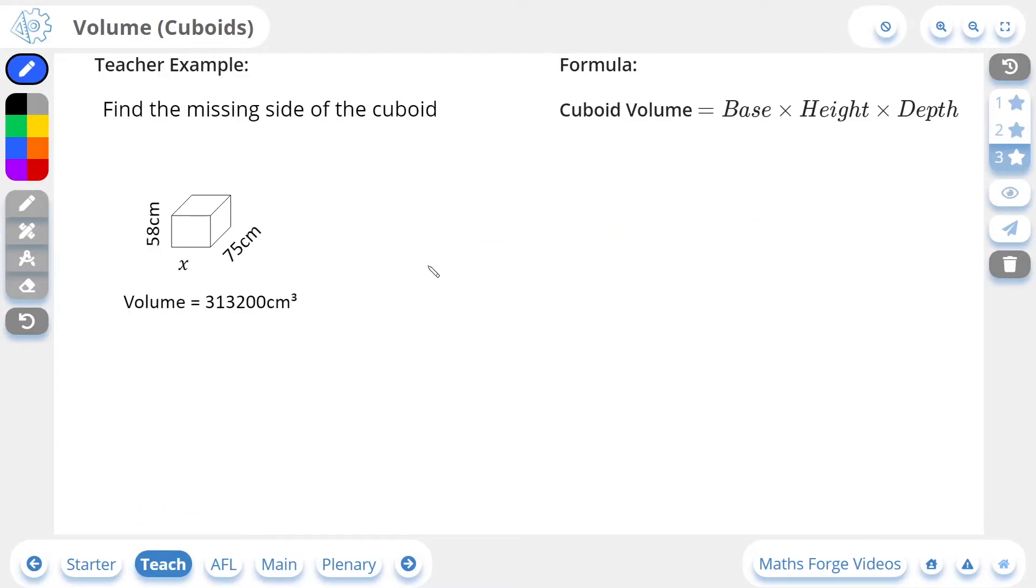Now let's do a 3 star example. Here we're asked to find the missing side of the cuboid. And so they've given us 2 of the sides, they've given us the height and the depth, but we need to find the base. But they've also given us the volume of this cuboid. So what we're going to do is, we're going to take the formula for the volume of a cuboid, and we're going to start replacing values in it, with the values that we have here.